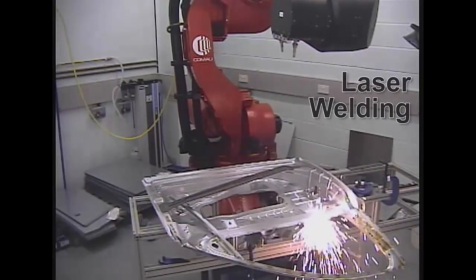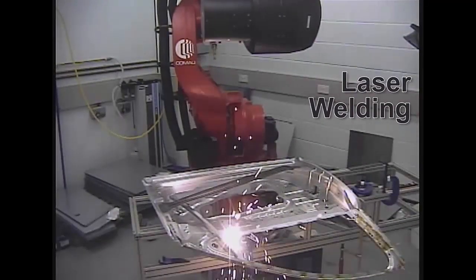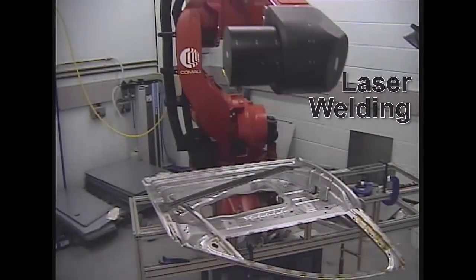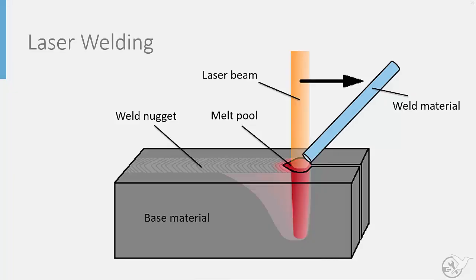Laser beam welding is an alternative method for welding metal parts together. The overall process is quite similar to arc welding with the exception of the method of heating used. As the name suggests, laser beam welding uses a high energy laser beam to melt a rod of weld material that is then deposited in the melt pool to weld.